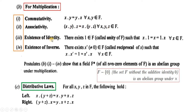Existence of multiplicative identity: there exists 1 belonging to F, called unity of F, such that x·1 = x and 1·x = x for all x belonging to F. یعنی set F کے تمام elements کے لئے، اسی set F میں one ہے، اور اسے کسی element کے ساتھ multiply کریں تو وہی element واپس ملتا ہے۔